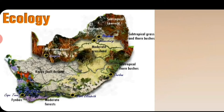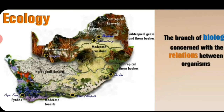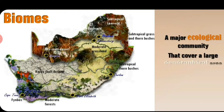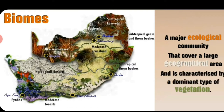When we look at ecology, '-ology' always refers to a study. So ecology is the branch of biology where we look at the relationships between organisms and their environment. These environments can be divided into different biomes — a biome is a major ecological community that covers a large geographical area and is characterized by a dominant type of vegetation.